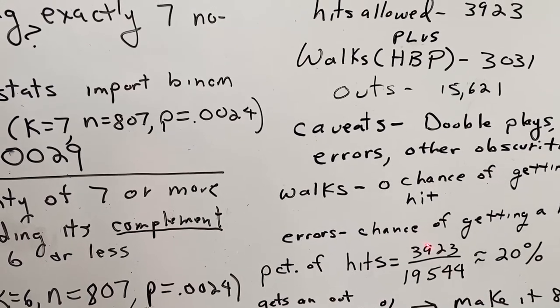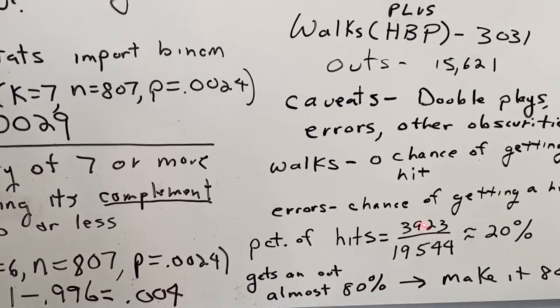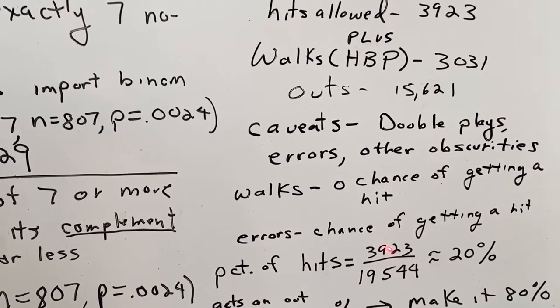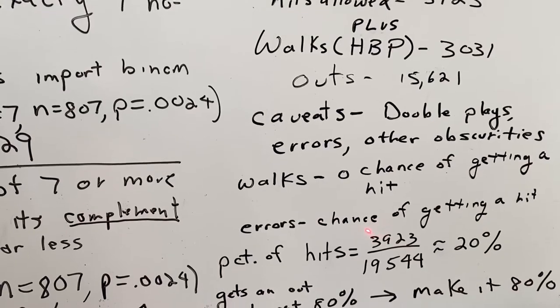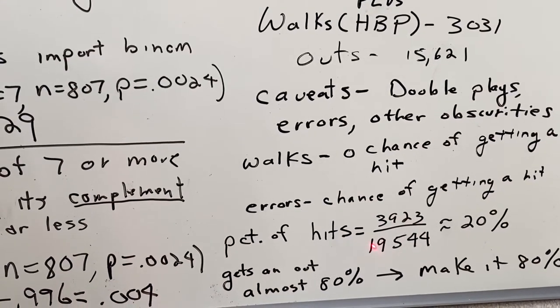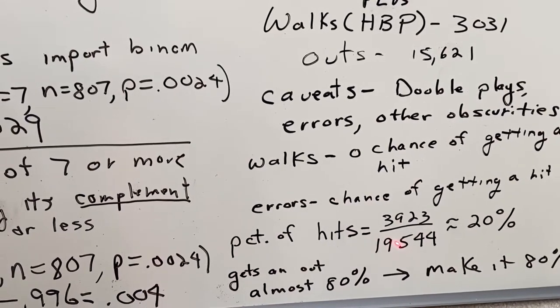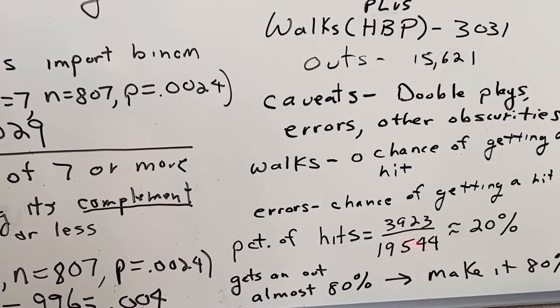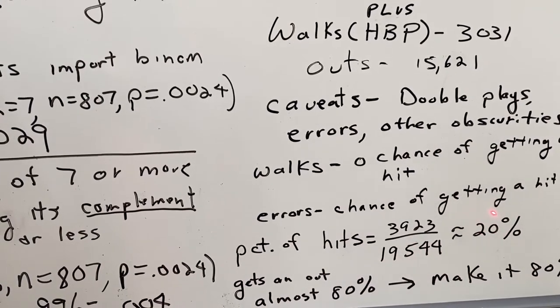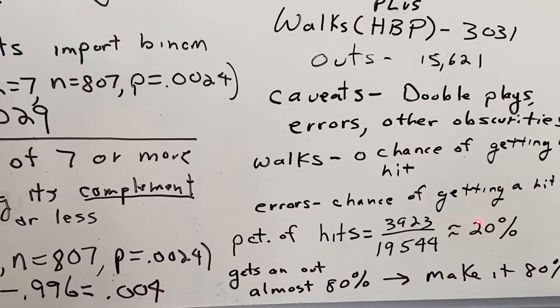Since we're ignoring walks, we're going to assume it's either going to be a hit or an out. 3923 hits, divided by 3923 plus the number of outs, which is 15621. That's 19544. About a 20% chance of any batter getting a hit.